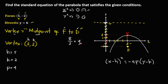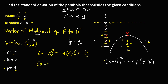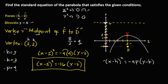Substituting the values — h = 5, k = 2, p = 4 — we get (x − 5)² = −4(4)(y − 2). Simplifying: (x − 5)² = −16(y − 2). This is now the standard equation of the parabola.